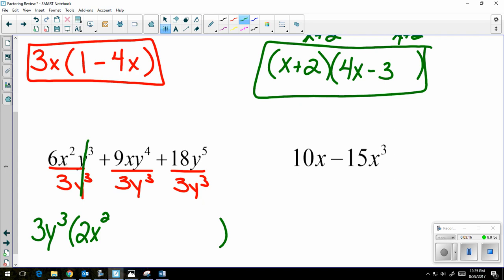And y cubed divided by y cubed is going to divide out. It's going to give you 1, but we don't need to include that. Plus 9 divided by 3 gives me 3. My x stays.